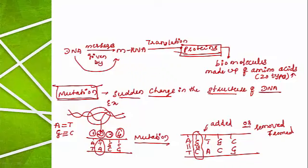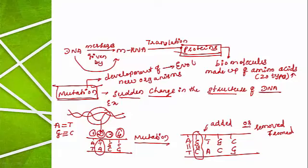Mutation is a very helpful process for evolution, because mutation results in the development of new organisms. Whenever new organisms are developed on earth, it is called evolution. So evolution is due to mutation. During mutation, the change in the structure of the DNA molecule occurs — it may be due to addition or removal of a nitrogen base. This is how DNA is responsible for evolution.